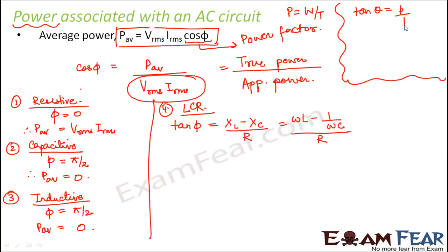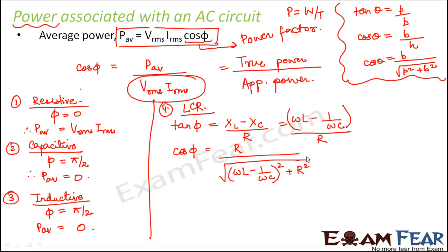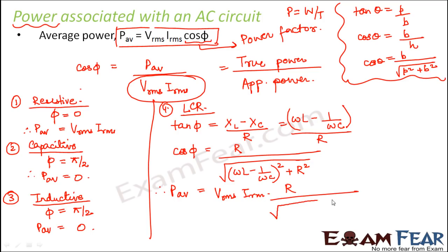Using trigonometry: tan θ = perpendicular / base, so cos θ = base / hypotenuse, and by the Pythagorean theorem, hypotenuse = √(P² + B²). Applying this, cos φ = R / √[(ωL − 1/ωC)² + R²]. Therefore, in an LCR circuit, P_average = V_rms × I_rms × R / √[(ωL − 1/ωC)² + R²].